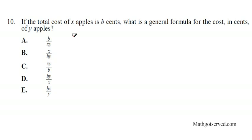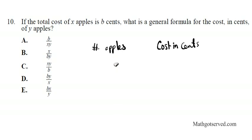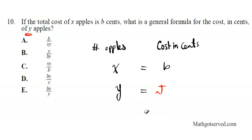Number 10 says: if the total cost of x apples is b cents, what is the general formula for the cost in cents of y apples? We'll set up two columns: number of apples and cost in cents. We know x apples cost b cents, and we want to find the cost for y apples — let's call it j cents. The goal is to isolate j.